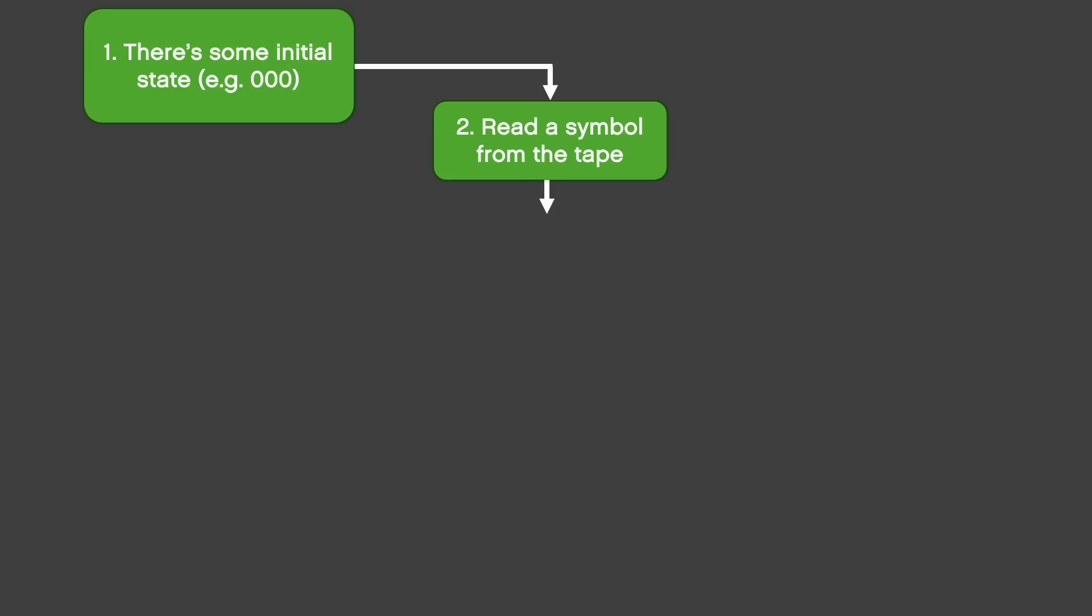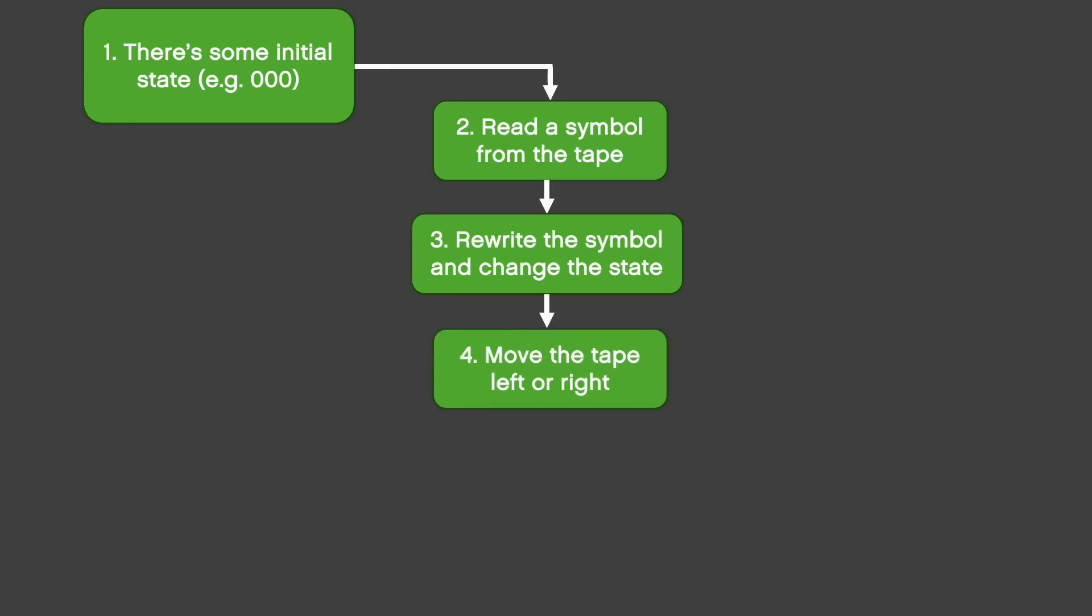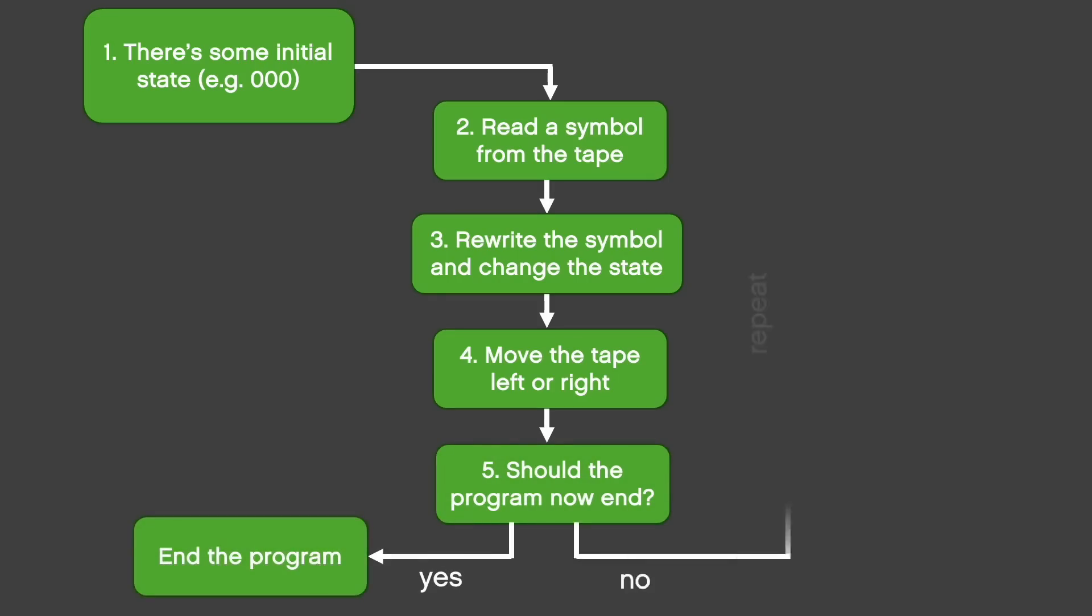Now, based on the first 5 bits of the instruction, the machine goes into a new state and prints a new symbol in place of the one it has read before. Then it moves the tape left or right depending on bit 6 of the instruction and if bit 7 is high, it exits the program. If the program continues, the cycle starts over again.